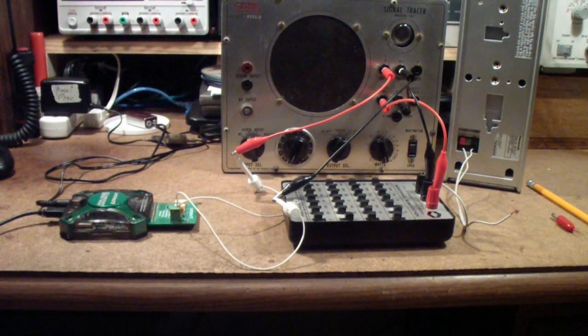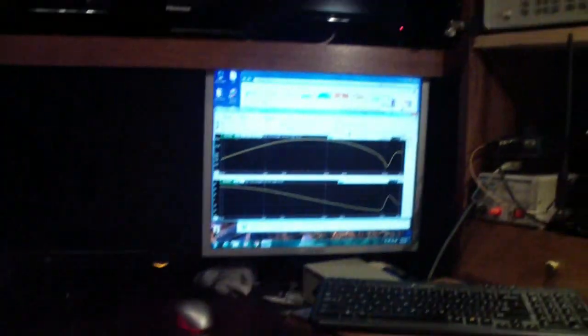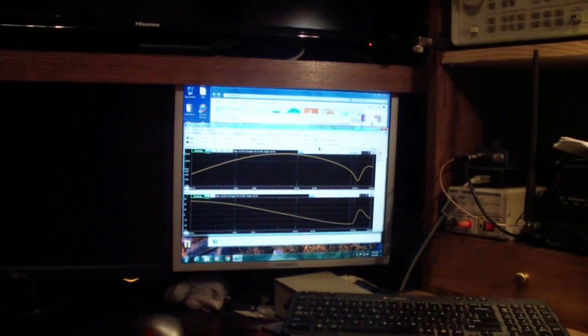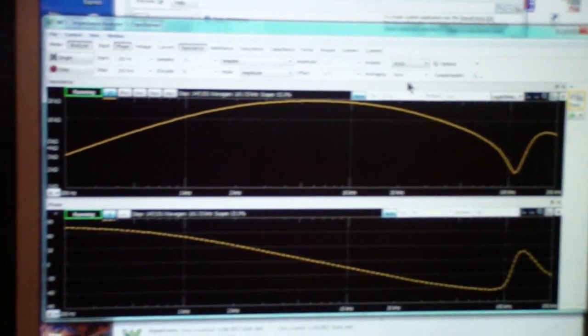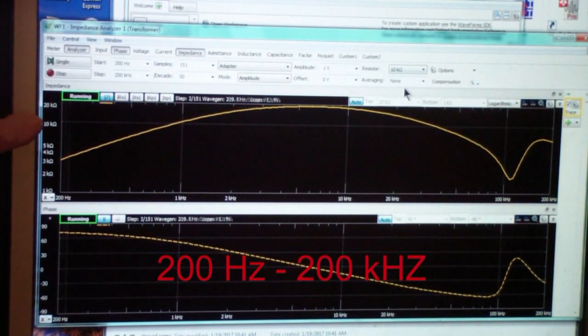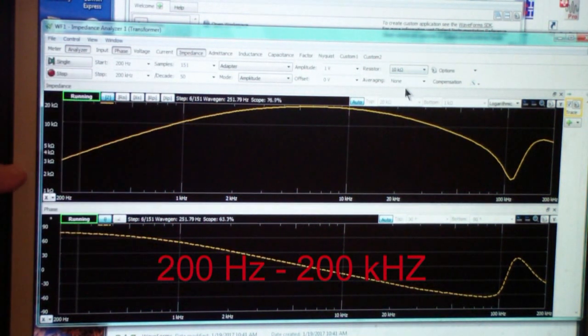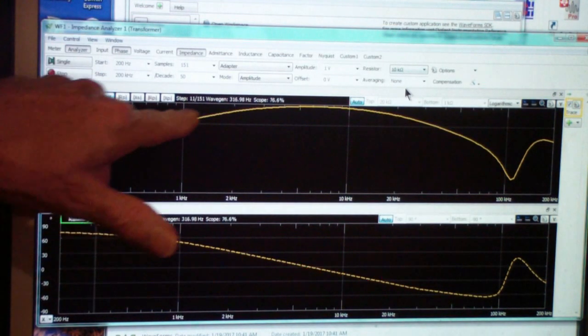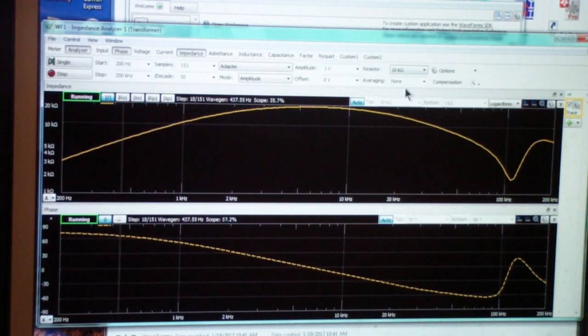But first, let's look at what we see on the waveforms display. That is the software for the analog discovery. Let me zoom in. And you notice there that this is, in case you can't read it, the top line here is 20k ohm. And this is 3k ohm. So it starts at about 3k ohm. And this is the impedance of the speaker. And this is the phase angle. So keep that in mind.